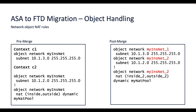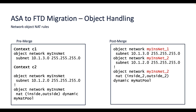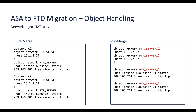If there is a network object NAT in one context and an object with the same name but a different value in another context, the tool renames the objects before merging. If there are network object NAT rules in different contexts with the same interface name and same object name, the tool renames the objects and interfaces, ensuring the objects are mapped correctly with the NAT rule.